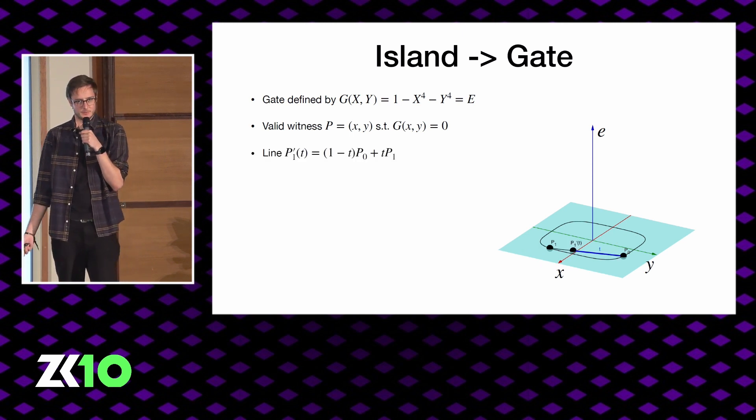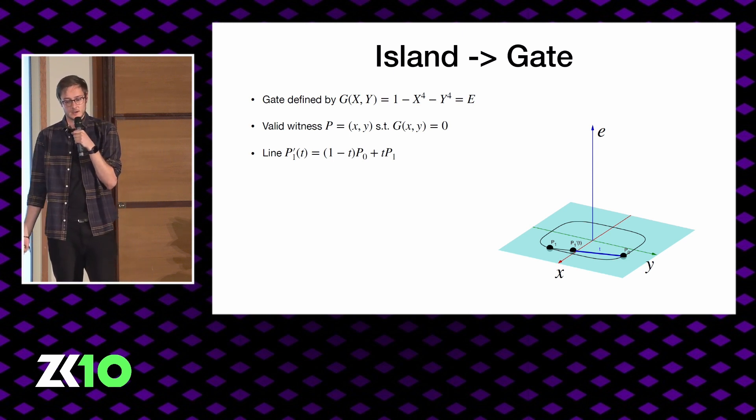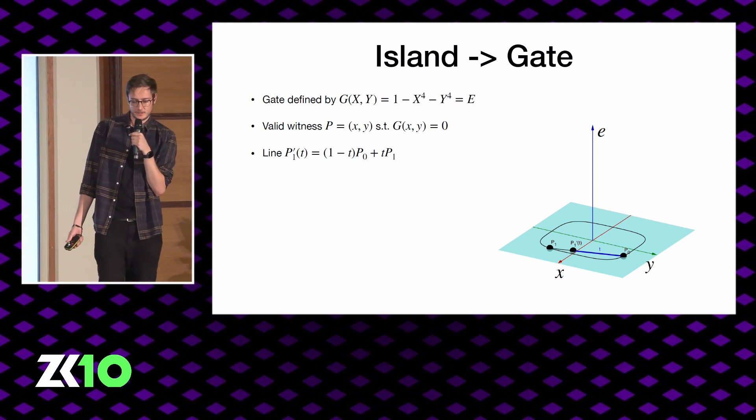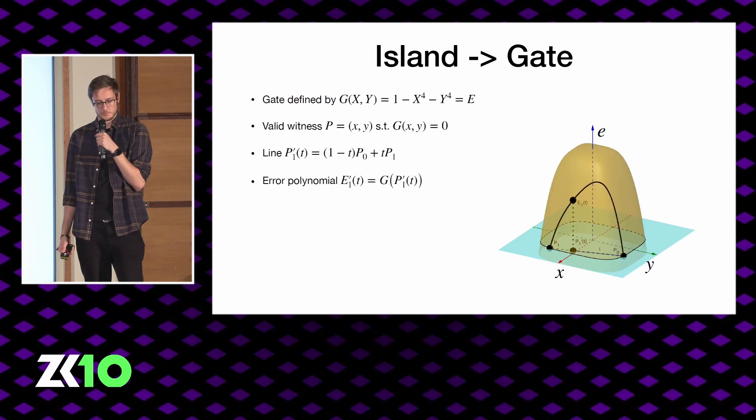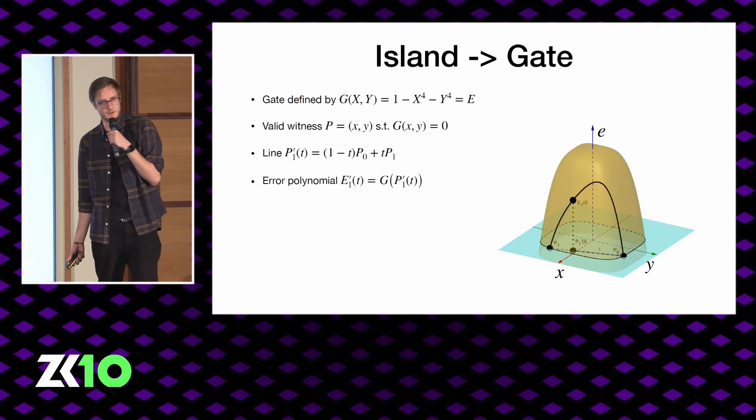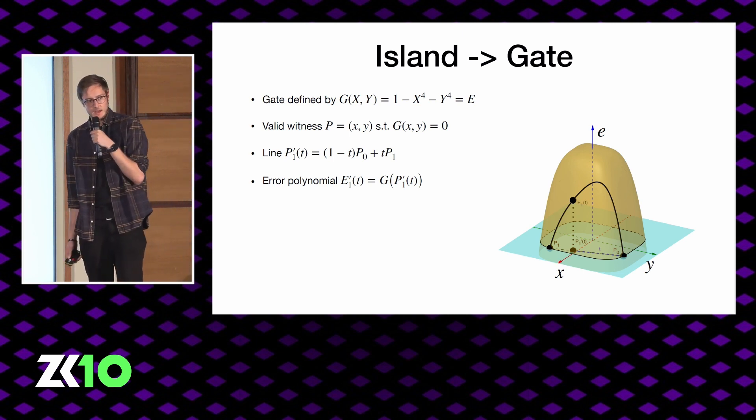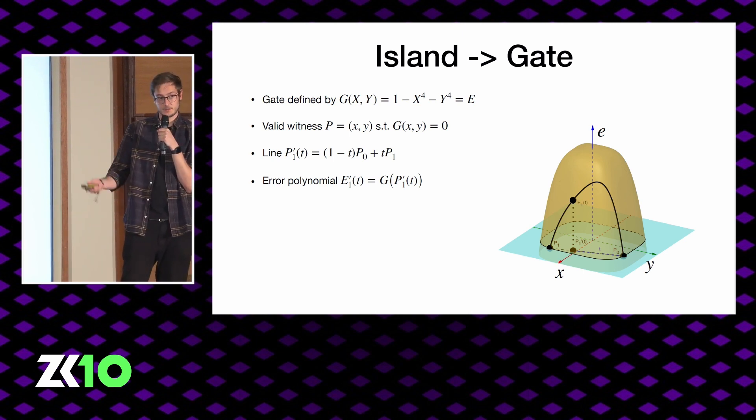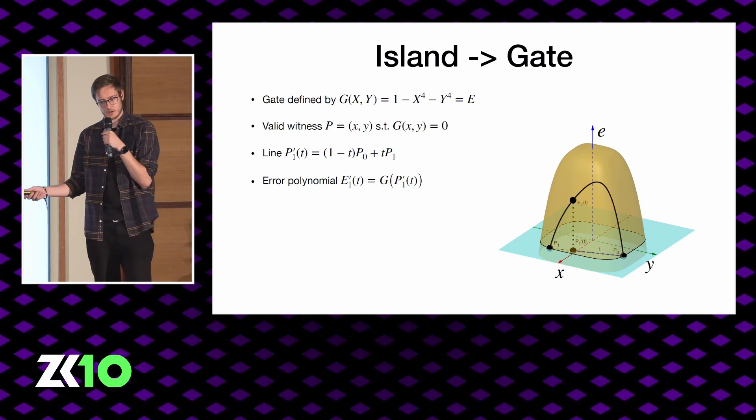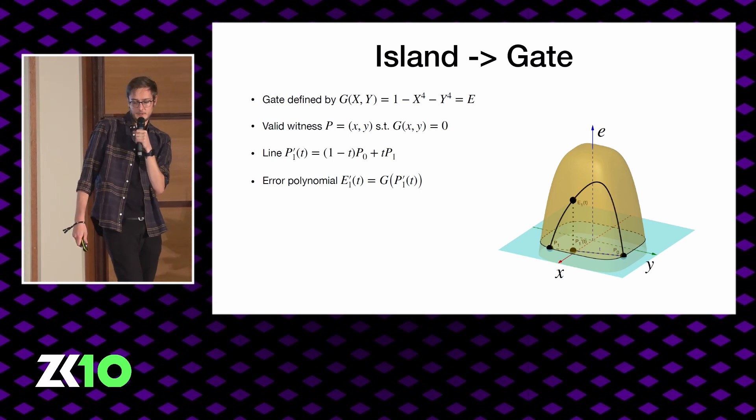And just as we can draw a line between two points on the map, we can actually do the same thing with witness coordinates by simply interpolating between the two. This defines a linear polynomial. It's a line which maps between the two, which passes between the two points. Now the elevation map is what's sometimes referred to in these papers as the error polynomial or the slack polynomial. And it's simply explained by evaluating the elevation over all the points in the line. So we just need to plug in our equation for our line into the gate equation or our island equation. And that will give us a polynomial that defines the elevation between P0 and P1.